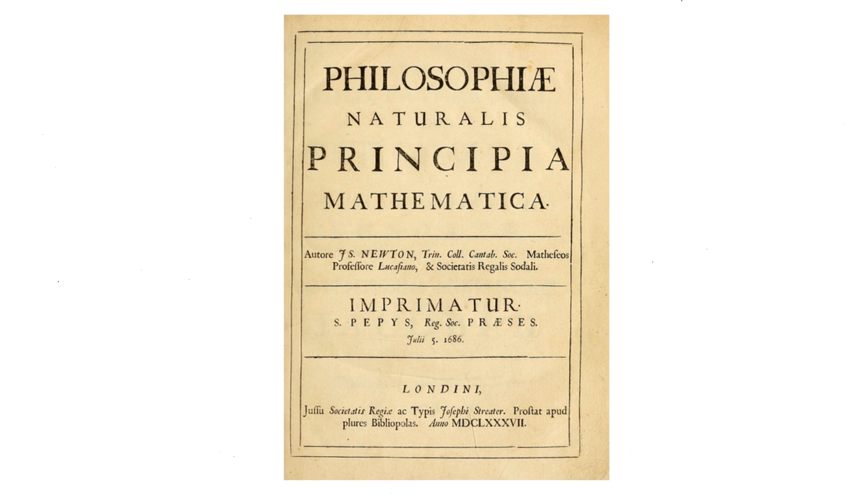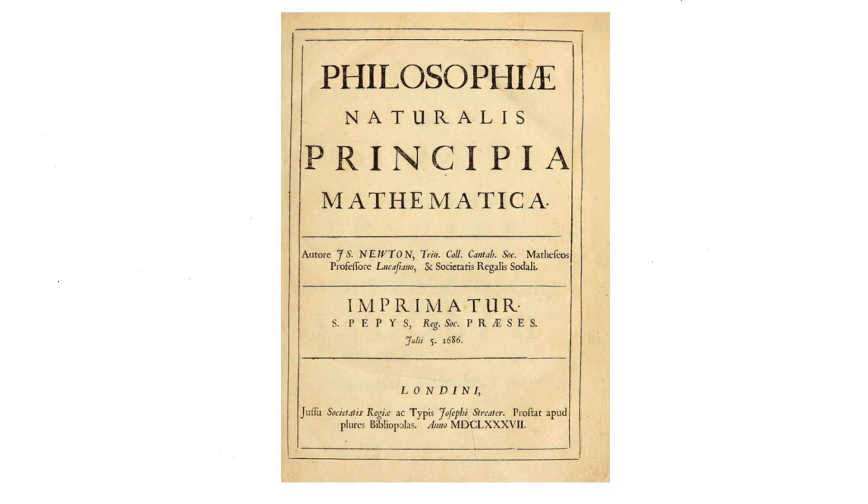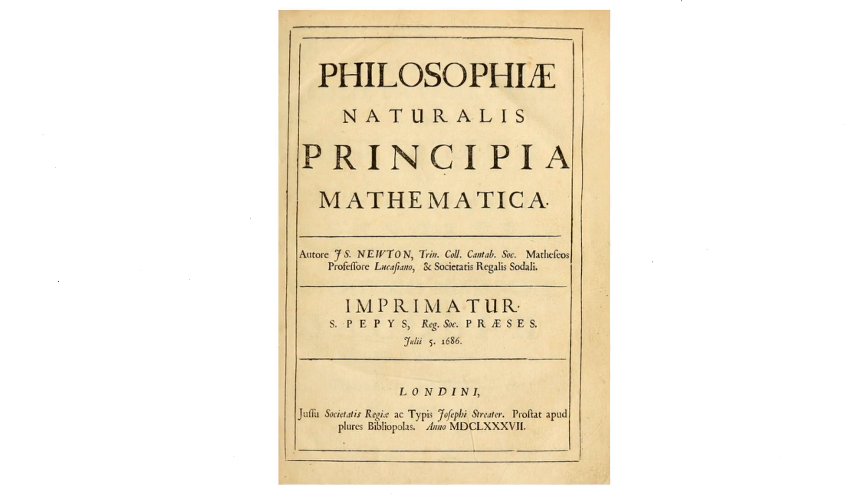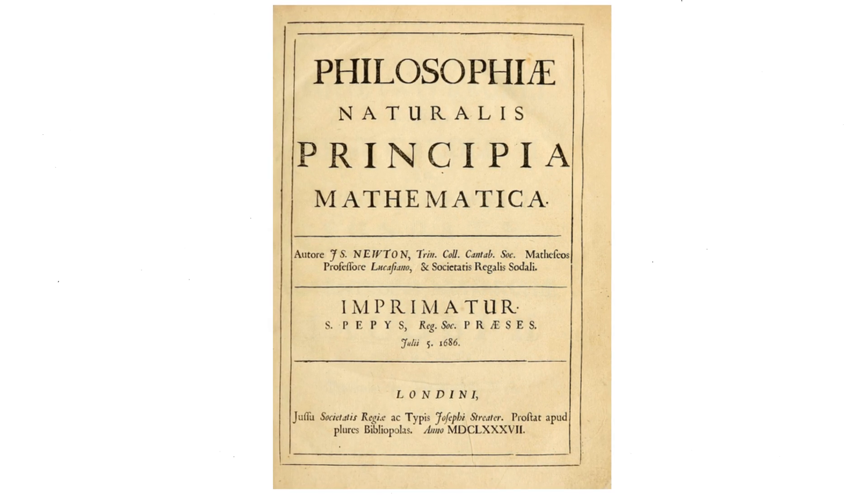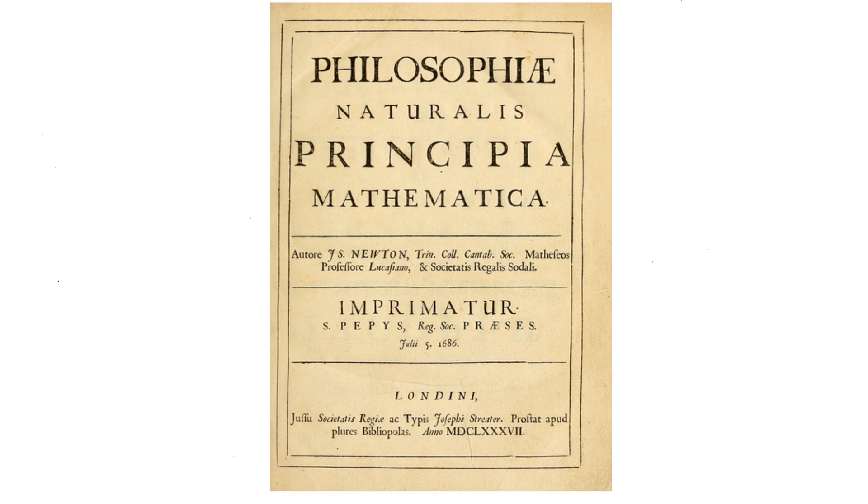Newton's justification of absolute space and motion is portrayed in his rotating bucket of water experiment at the beginning of his 1687 masterpiece Principia, which can be summarized as follows.